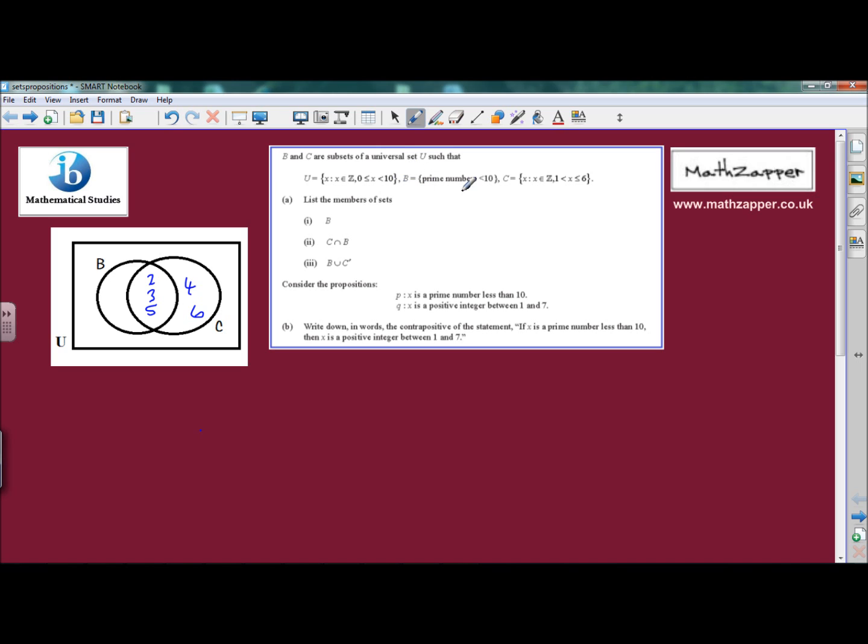B is the next set, all the prime numbers less than 10. Well we've got 2, 3, and 5 in this part, but the only one that is missing is 7, and that goes in the outside part there.